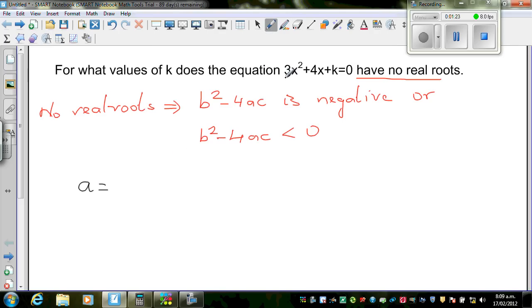The coefficient of x squared is 3, so a is 3. b is the coefficient of x, so b is 4. And c is the constant which is k.